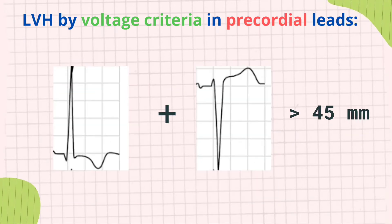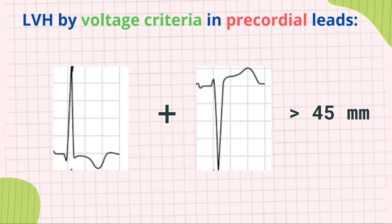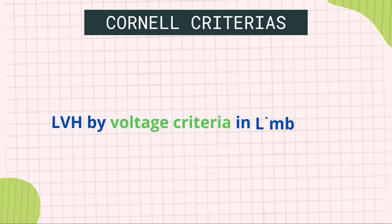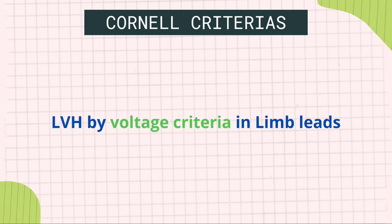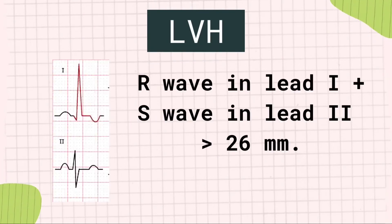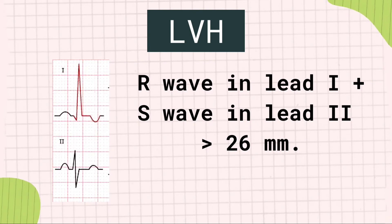Second, if the length of the maximum S wave plus R wave in any precordial leads exceeds 45 mm. The voltage criteria in limb leads also includes: the length of the R wave in lead I plus the length of the S wave in lead II should be greater than 26 mm.